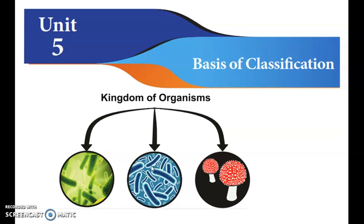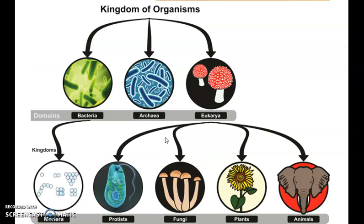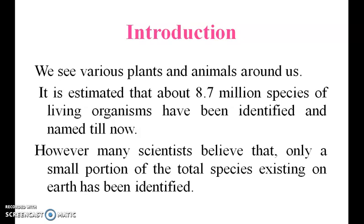Good morning students. Today we are going to see about the basics of classification — that is, the kingdom of organization, and how we are going to classify. Every kingdom we want to go through: bacteria, algae, monera, fungi, plants, and animals. We see various plants and animals around us. It is estimated that nearly 8.7 million species have been identified so far.